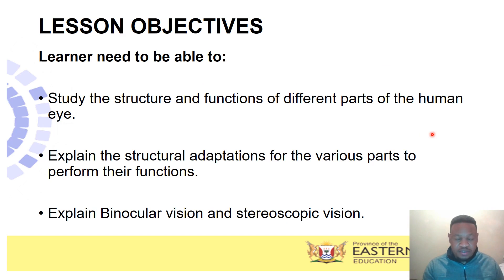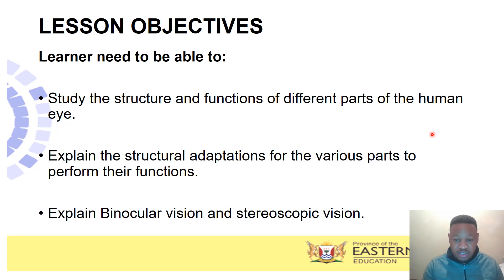Our lesson objectives from the examination guidelines — what you as the learner need to know at the end of this topic — you need to be able to study the structure and the functions of different parts of the human eye. In Life Sciences, we study the structure of the diagrams and you will be asked to answer questions based on the diagrams, giving the function of the labeled parts. You need to teach yourself to study the diagram first, see what is given there, and then move on to the question and see what is asked. You don't just label everything on the diagram.